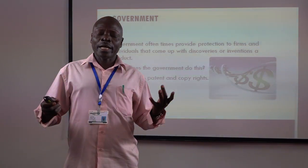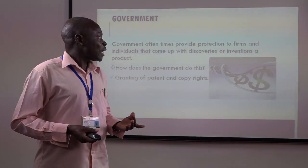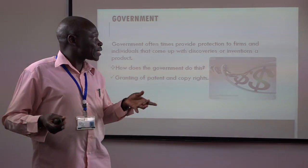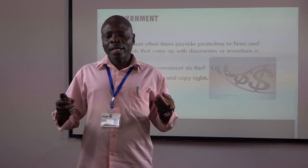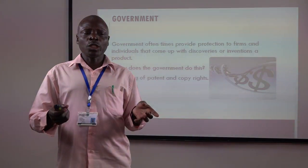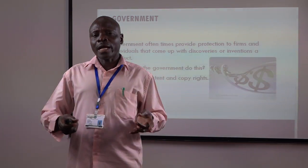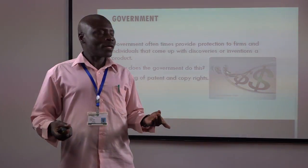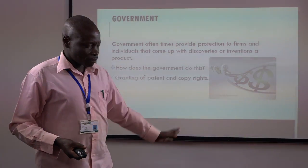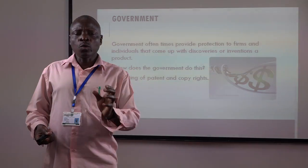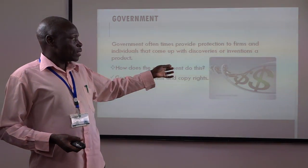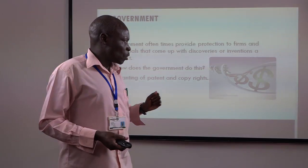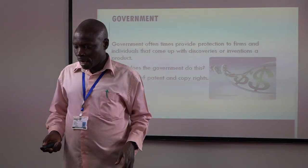The government also participates in the creation of monopolies. The government often provides protection to firms and individuals that come up with discoveries. When a firm comes up with a discovery, the government gives that firm the opportunity to enjoy it for a particular period of time. This protection can be in the form of patent rights or copyrights. As you can see in the photograph, no other firm will produce a similar item, so the firm becomes a monopolist.